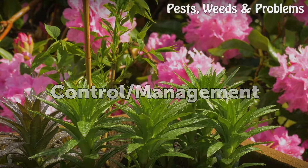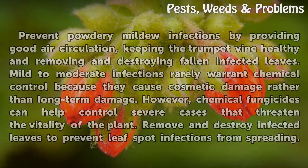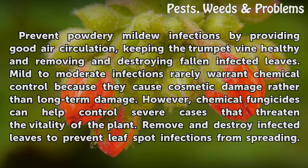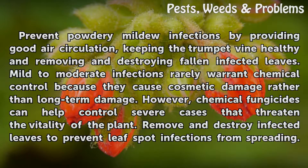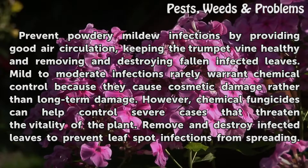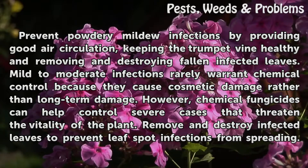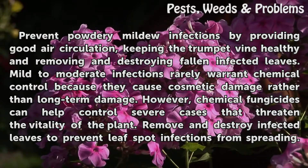Control and Management. Prevent powdery mildew infections by providing good air circulation, keeping the trumpet vine healthy, and removing and destroying fallen infected leaves. Mild to moderate infections rarely warrant chemical control because they cause cosmetic damage rather than long-term damage. However, chemical fungicides can help control severe cases that threaten the vitality of the plant.